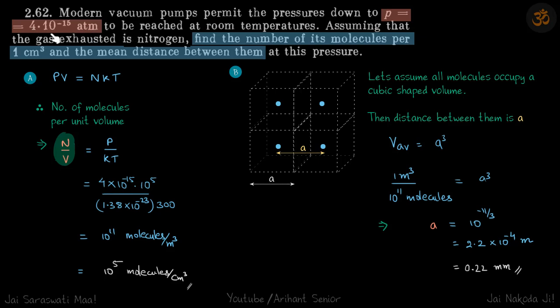We are given that the pressure is 4 × 10^-15 atmosphere. We need to find the number of molecules per cubic centimeter and the mean distance between them at this pressure.